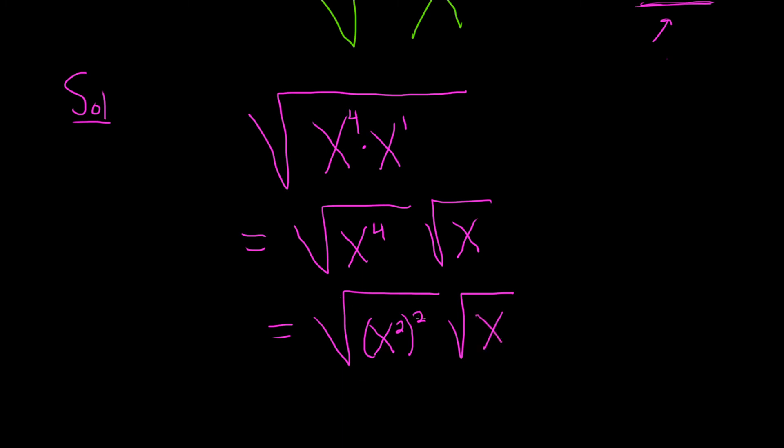And what happens is the square root gets rid of the 2. So it's kind of like they cancel. So you end up with simply x squared square root of x. And that would be the final answer. I hope this video has been helpful.